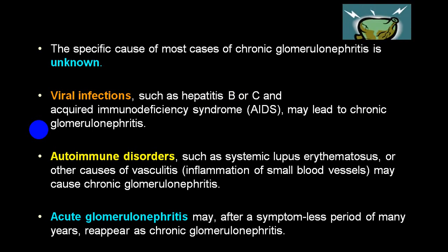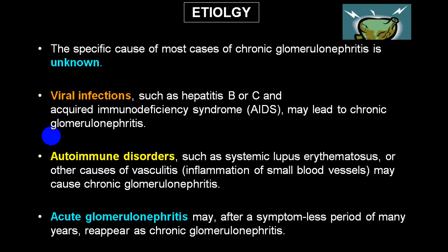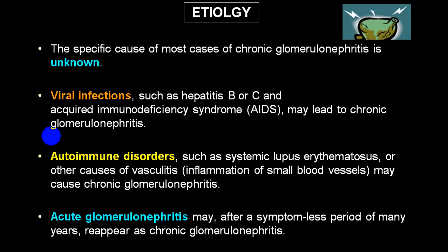The most common cause of chronic glomerulonephritis is idiopathic. Another common group is non-streptococcal glomerulonephritis — caused by viruses such as hepatitis B, hepatitis C, or HIV. Autoimmune disorders producing vasculitis, like SLE, are also a very common cause for glomerulonephritis. Acute glomerulonephritis, as mentioned, will progress into a chronic state.